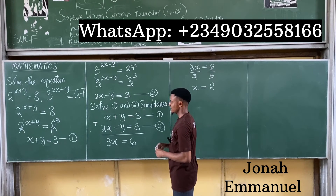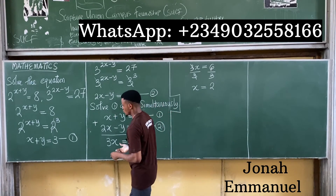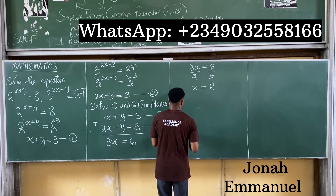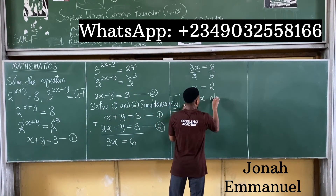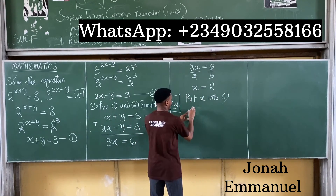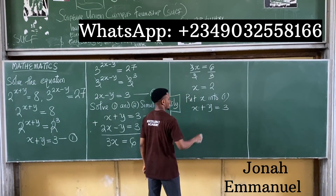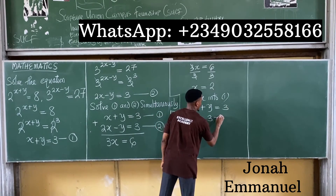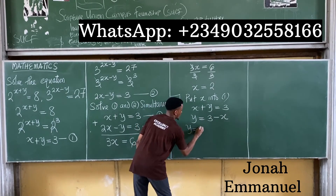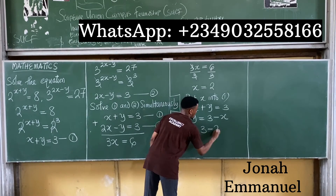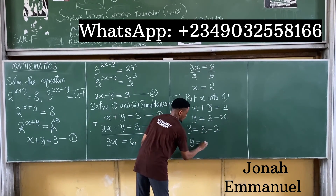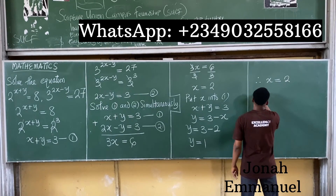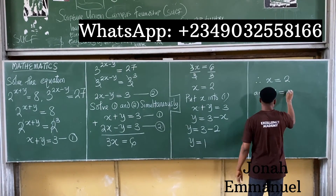Now let's get y. Put the value of x into equation 1. From equation 1: x plus y is equal to 3. To get y, move x over: y is equal to 3 minus x. Since x is 2, y equals 3 minus 2, which is 1. Therefore, x is equal to 2 and y is equal to 1.